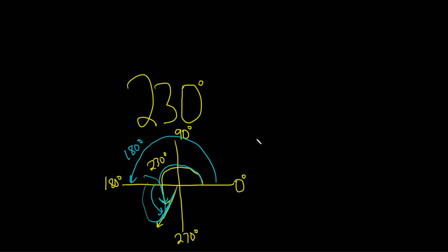So 230 minus 180 is going to give us 50 degrees.